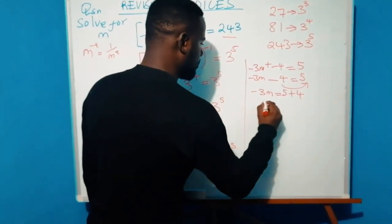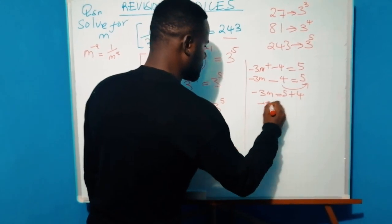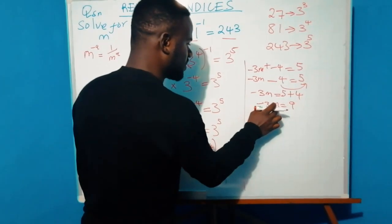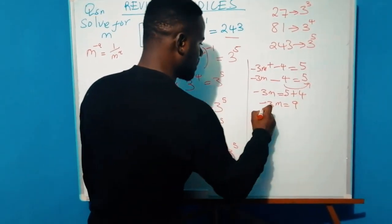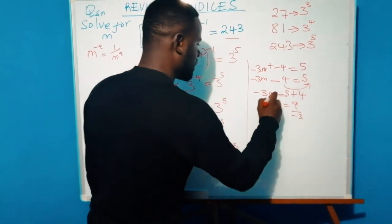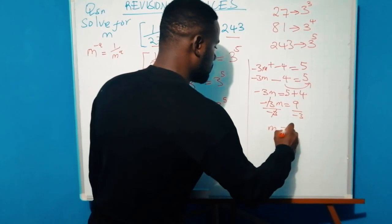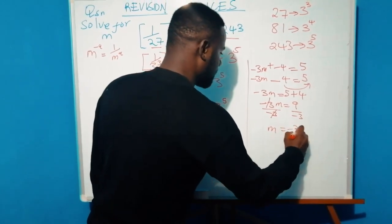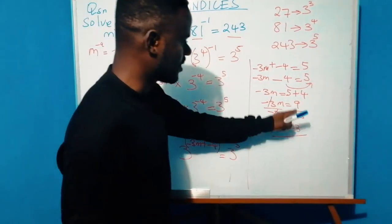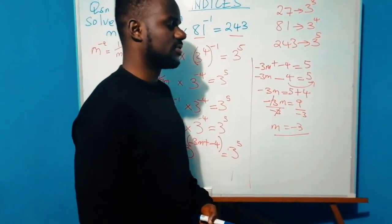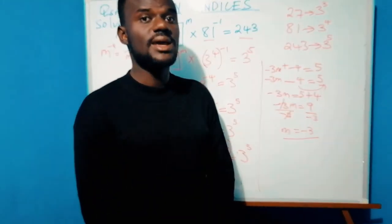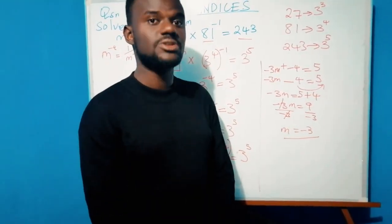So negative 3m equals 9. Dividing both sides by negative 3, we get m equals negative 3, because 9 divided by negative 3 equals negative 3. I hope you enjoyed the video — see you next time, and don't forget to subscribe.